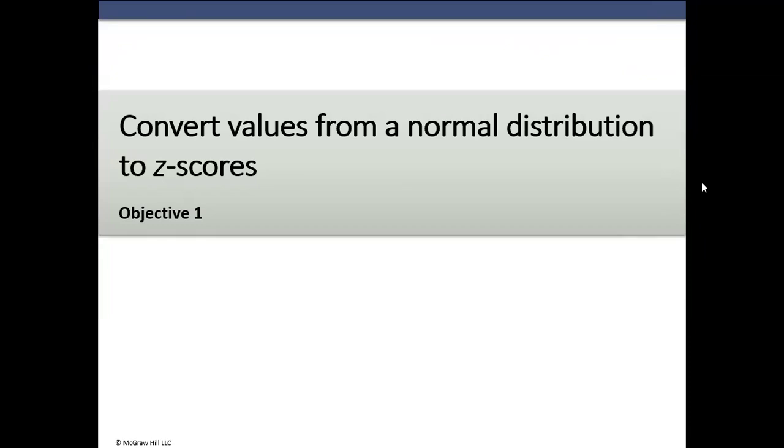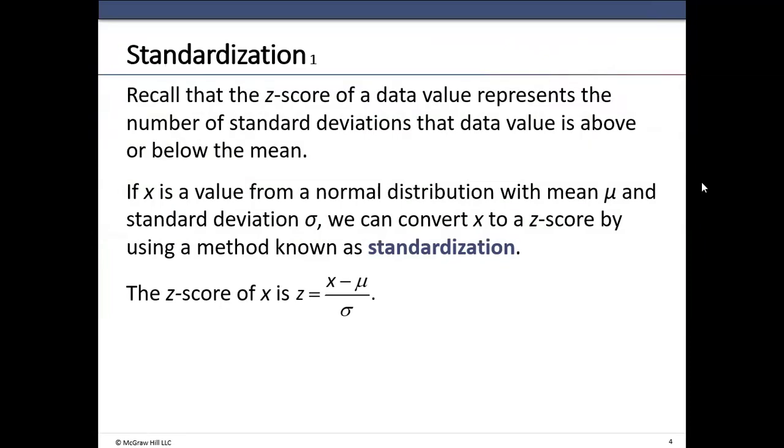Convert values from a normal distribution to z-scores. You can calculate z using this formula. Remember, z is a standard normal variable or z-score is given by taking any value x, subtracting the mean. How much does the number x deviate from the mean? The difference, the deviation, is divided by standard deviation.